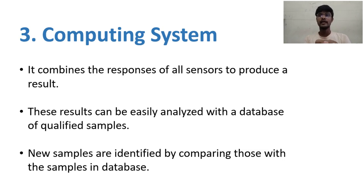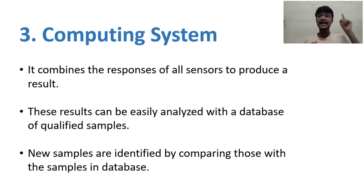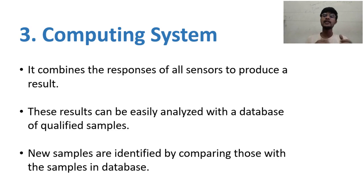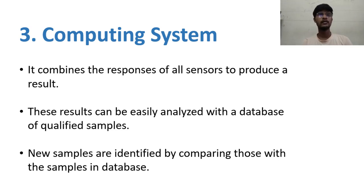In the computing system, there is a pre-existing database containing different digital values corresponding to different odors. The computing system takes the digital value received from the detection system, compares it with the values present in the database, and arrives at a result — identifying what the smell is and what compound is associated with that odor. Those are the three major components present in the electronic nose.